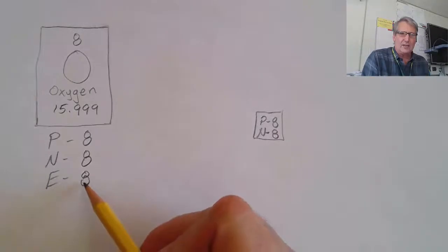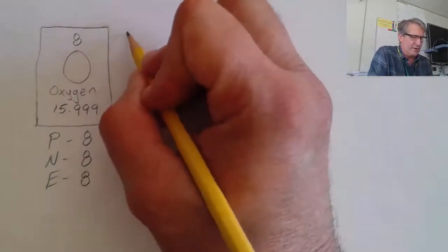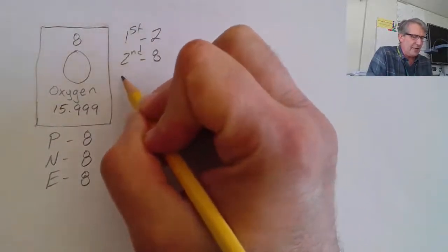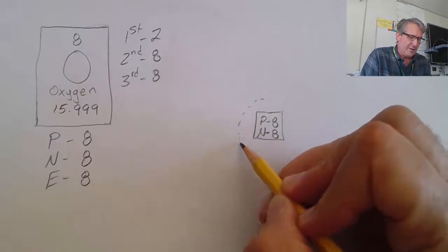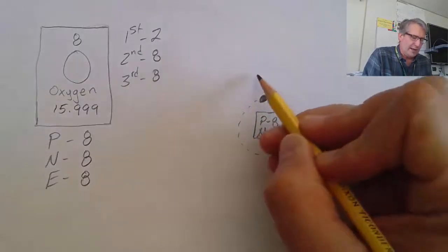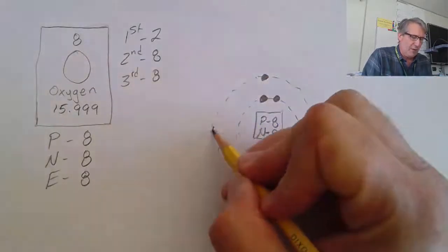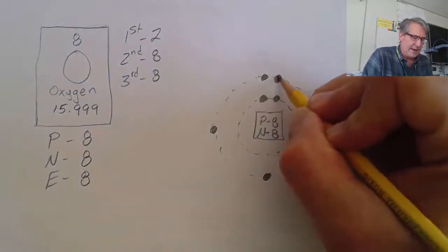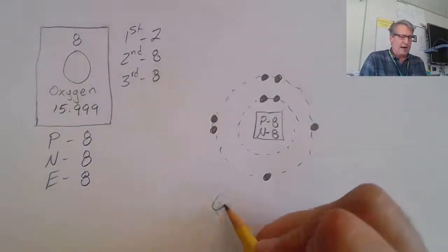We have eight electrons to distribute into the outer energy levels. Remember: first holds two, second energy level holds eight, third energy level holds eight. Starting with the first, we fill it with two electrons. Then we draw a second energy level and place the remaining six electrons — three, four, five, six, seven, eight. That is a Bohr model for oxygen.